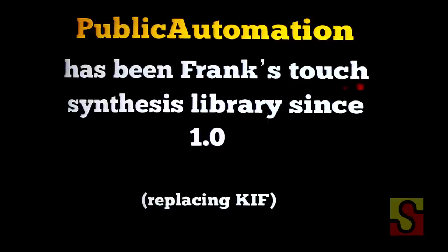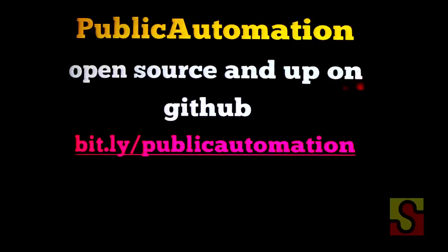Public Automation has been Frank's touch synthesis library since version 1.0, which was about a month or two ago. It replaced KIF — KIF is a similar level tool of low level touch synthesis. It's open source and up on GitHub, and I've already had people submitting pull requests, which is awesome. This talk is mainly to the other speakers to say I think we should collaborate on some of this stuff and not have to reimplement all of this boring touch synthesis — it's not fun rockstar stuff, it's just tedious and annoying, and it breaks when things change. I think Public Automation is a great alternative that gives us the best of both worlds.